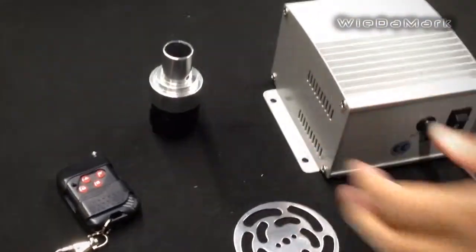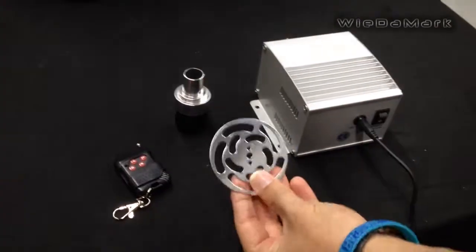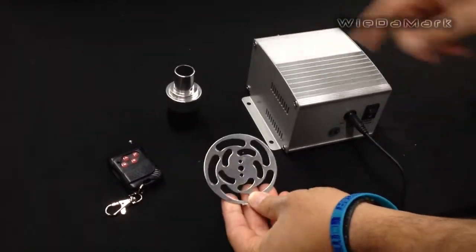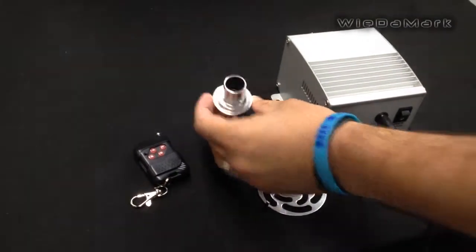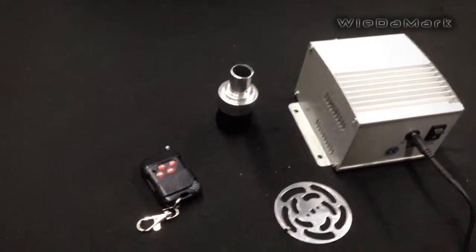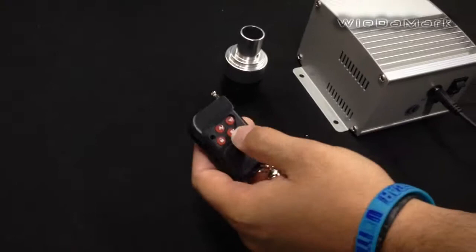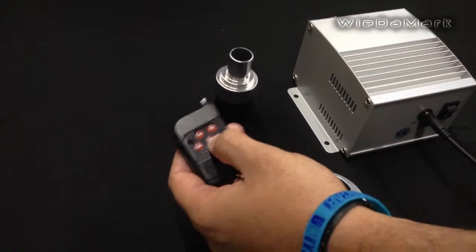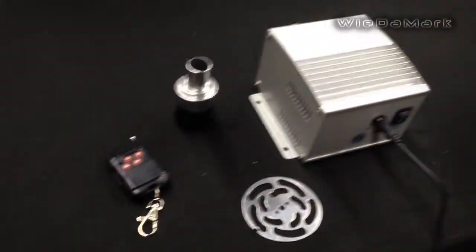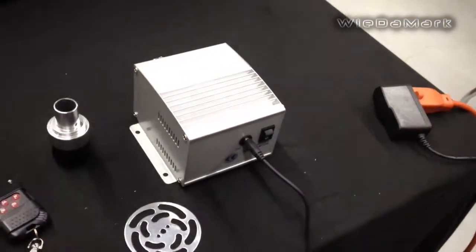What you get with the illuminator is this twinkle wheel that's installed inside. You get your compression fitting. It'll hold 400.75 millimeter fibers. You get a remote that allows you to dim the illuminator as well as pause the wheel and turn it on and off, and you get your transformer here to plug it in.